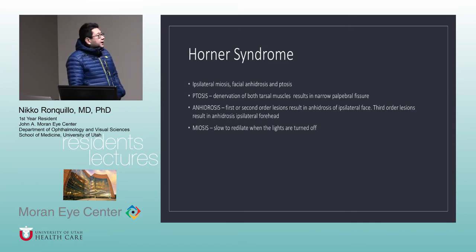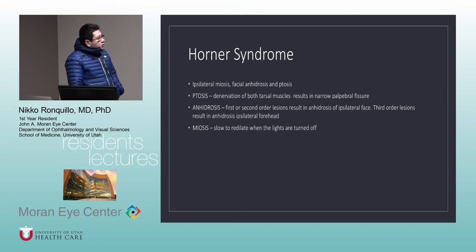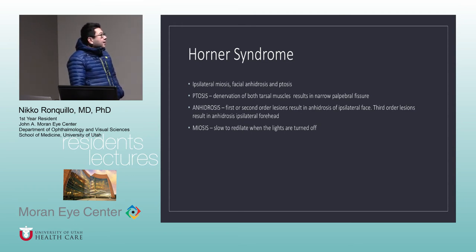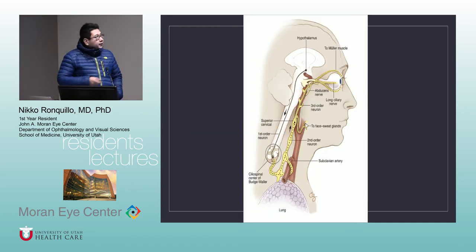The ptosis in Horner syndrome is due to denervation of both tarsal muscles, resulting in a narrow palpebral fissure. Anhydrosis is not tested clinically, but physiologically we get anhydrosis of the ipsilateral face from first or second order lesions. In third order lesions, it usually spares the lower face and affects only the ipsilateral forehead. The meiosis is slow to redilate when lights are turned off.